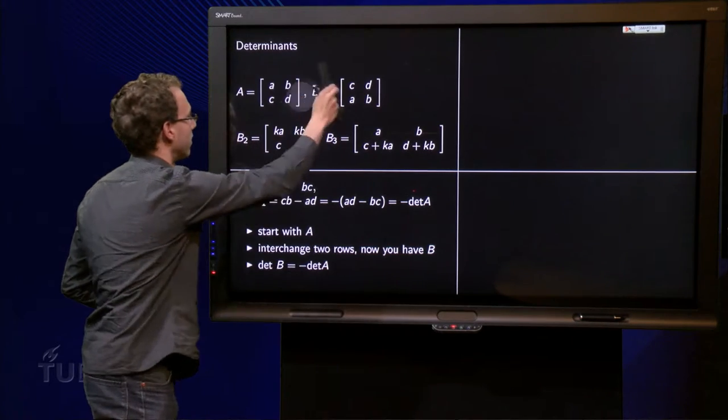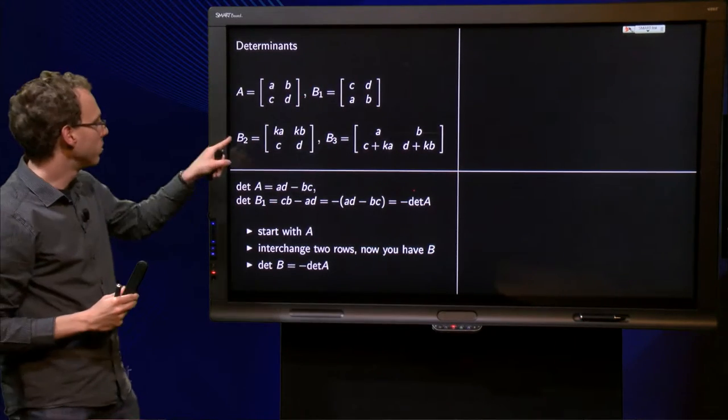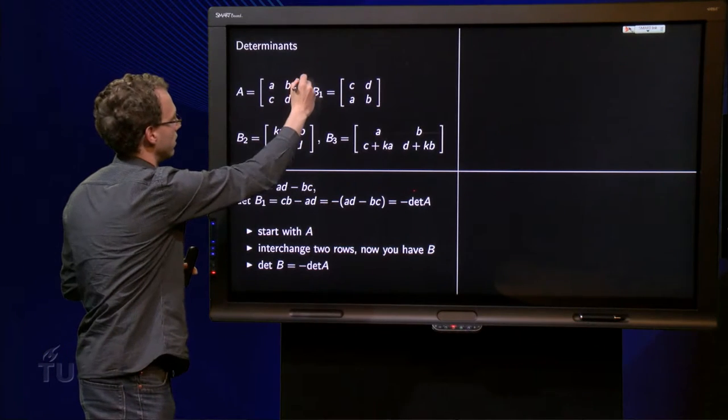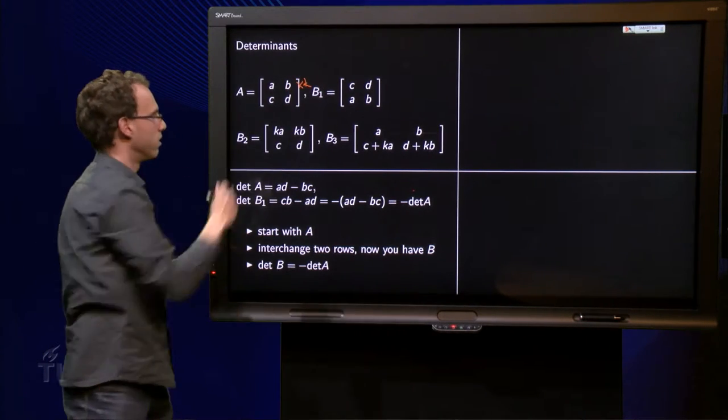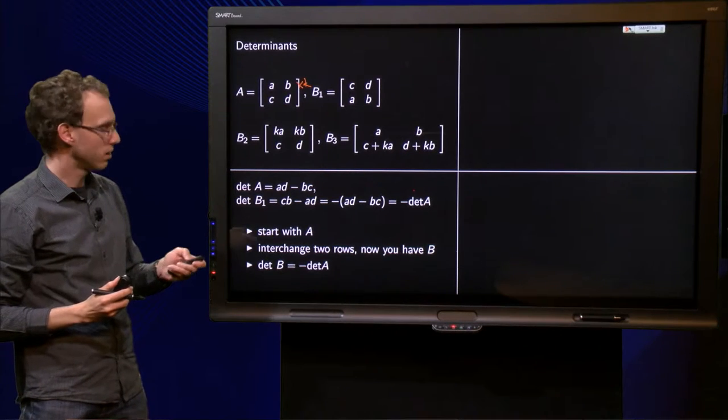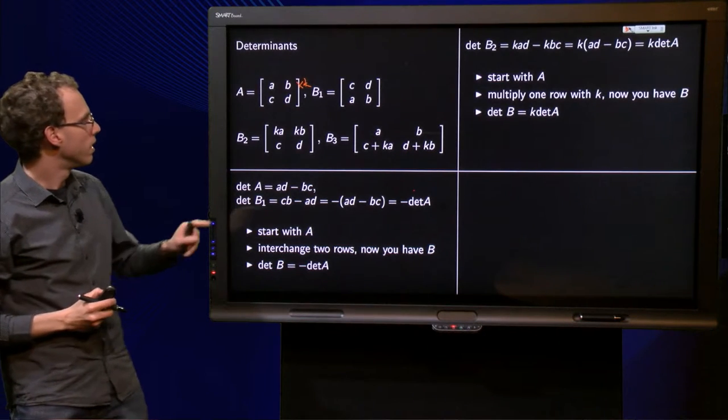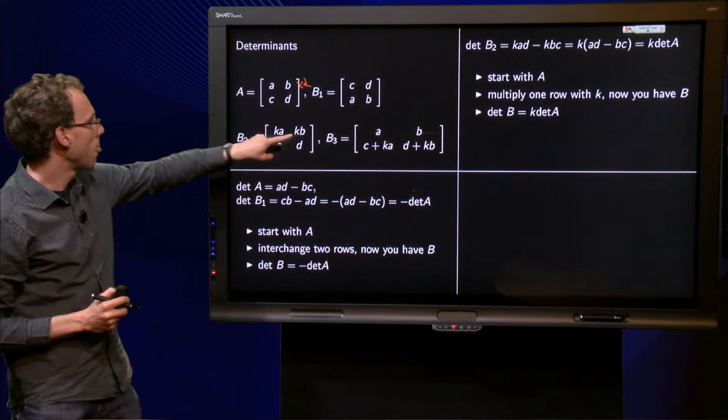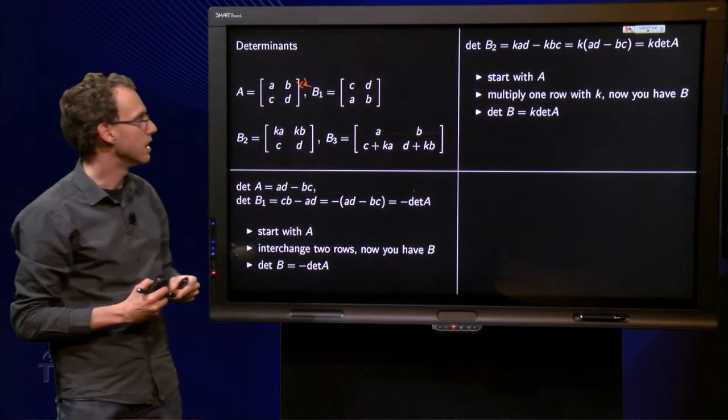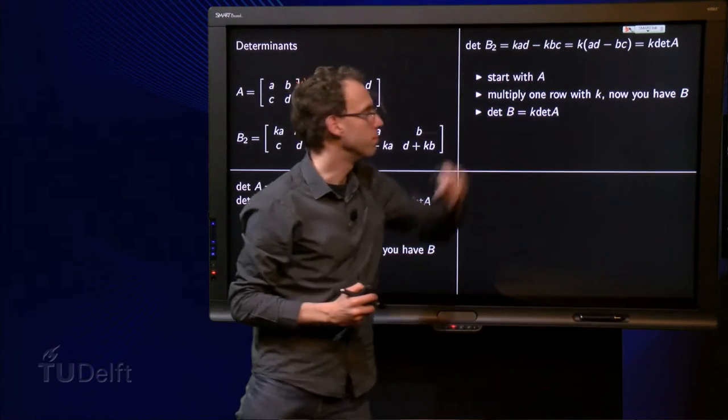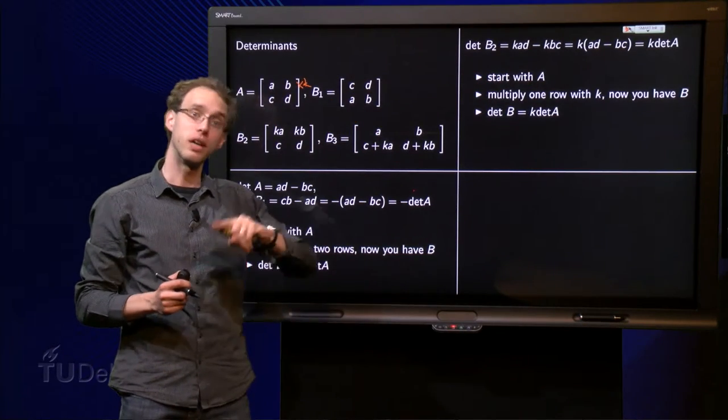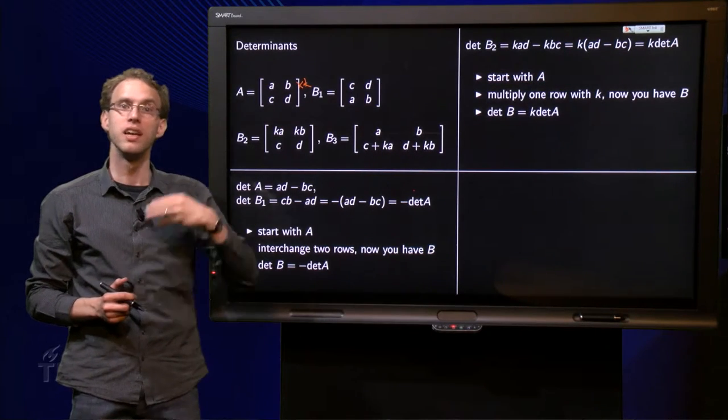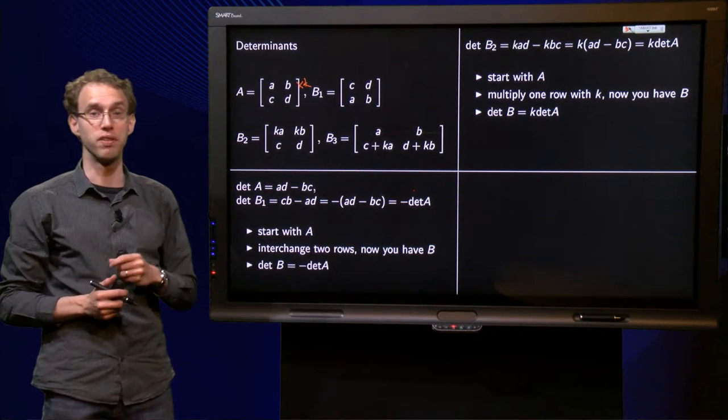Okay, next one. What did we do to get B2 out of A? Well, you can see it, we multiplied the first row with K. What about the determinants? Determinant of B2 equals K times A times D minus K times B times C, so KAD minus KBC. We can take out the K and we get K times AD minus BC equals K times the determinant of A.